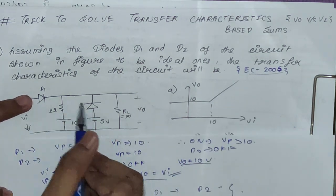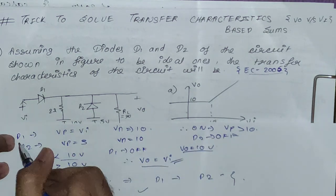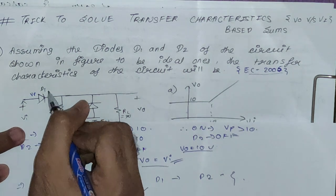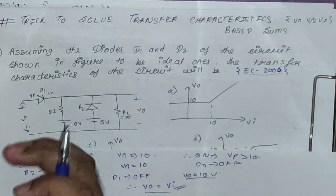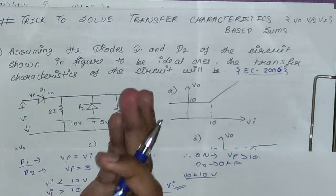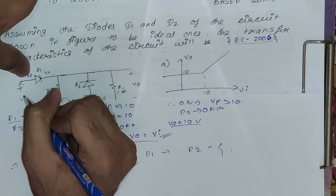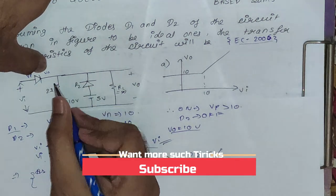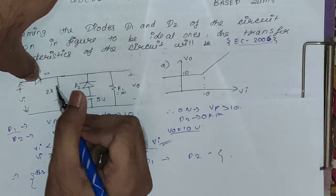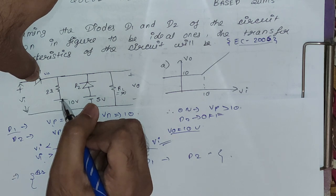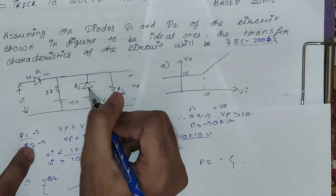We have this circuit with two diodes, and we first figure out for what condition these diodes are going to turn on. For D1, Vp equals Vi and Vn equals 10 V. I have open-circuited both diodes and checked Vp and Vn. With the diode open, there is no current in this branch, so the voltage drop across the resistor is 0 V — whatever voltage is present at the source appears at this node — giving Vn equals 10 V.